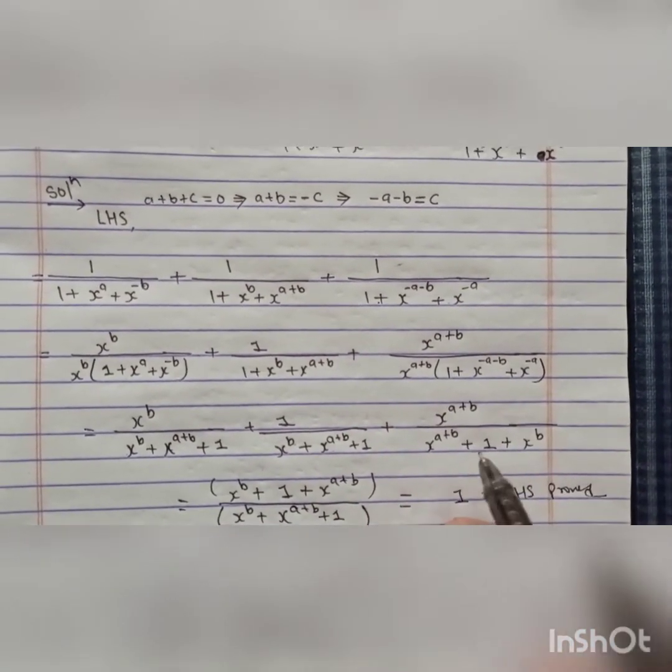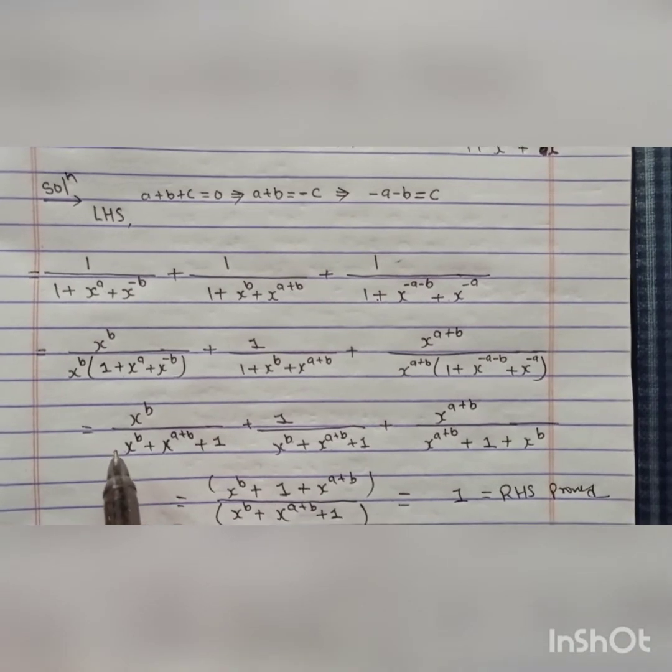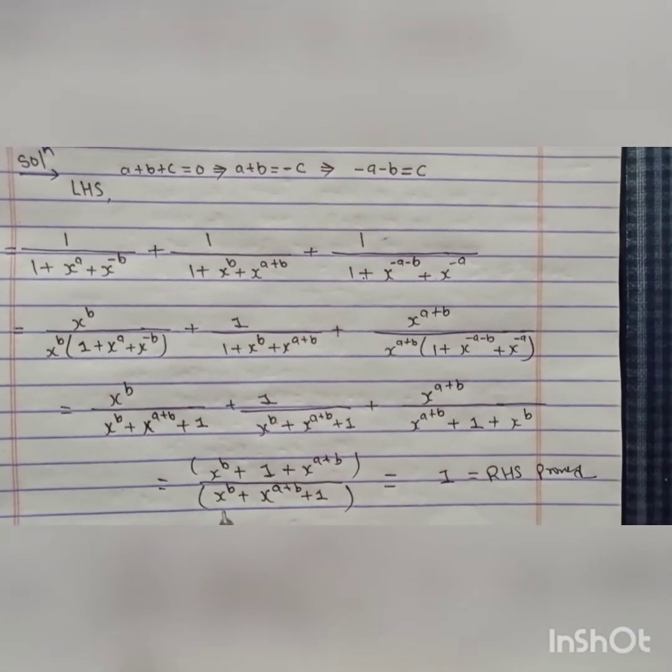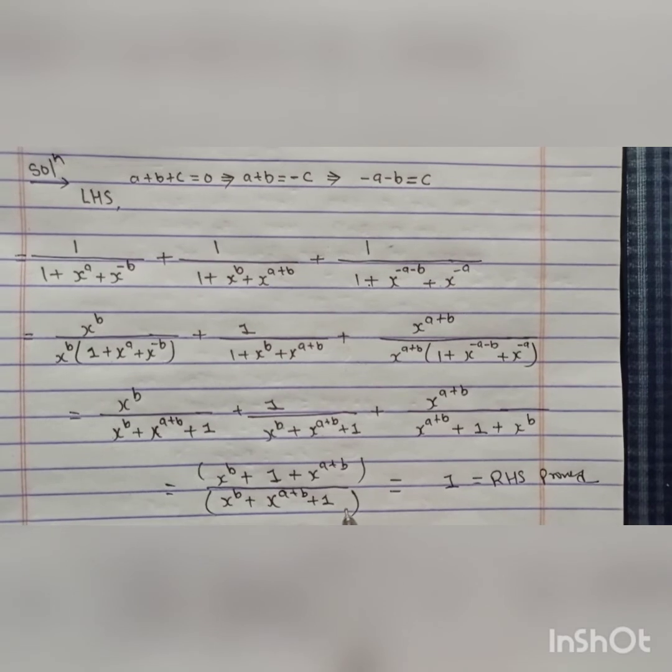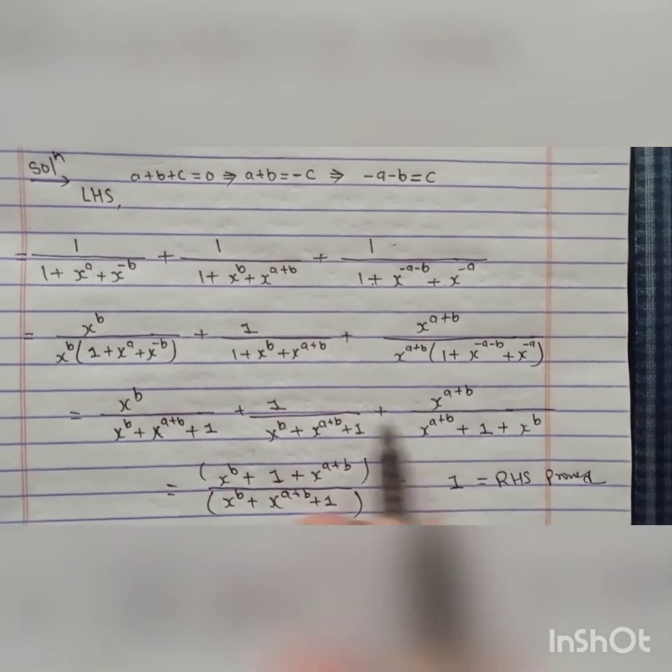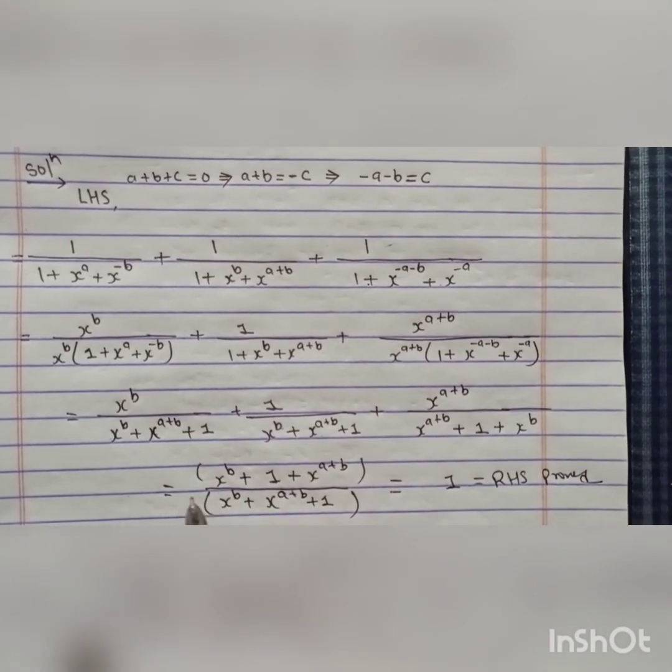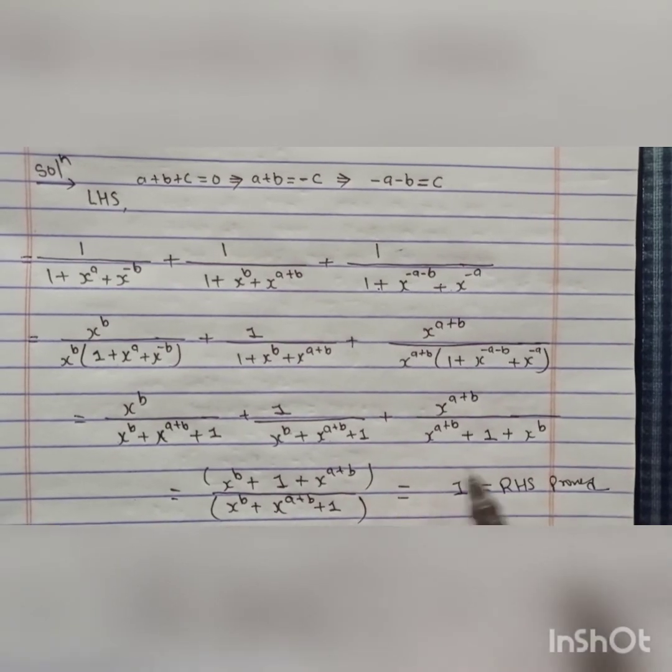As we can see, all the denominators are the same, so it is taken as LCM and the numerators are added. Numerators and denominators are also the same, so we get our answer: 1 equals RHS proved.